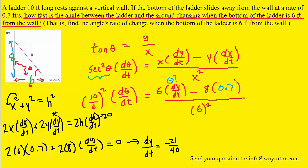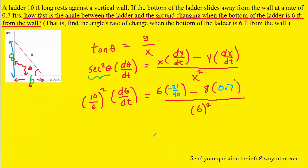We'll go ahead and we'll fill in the negative 21 fortieths up here now. Okay, so everything now is known in this equation. We can go ahead and just solve for d theta dt. And that'll give us the rate at which the angle is changing as the ladder falls down the wall.